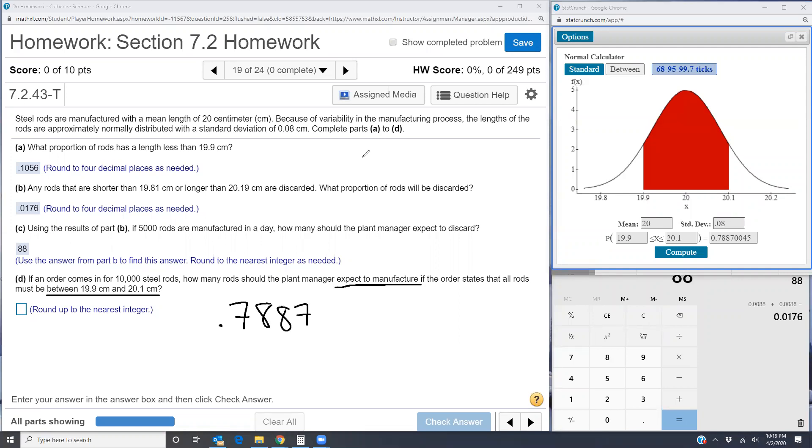So that proportion of the number of rods that are manufactured, I'm going to call that x, has to equal 10,000 rods. And so this becomes an algebra problem now. The 0.7887x equals 10,000.